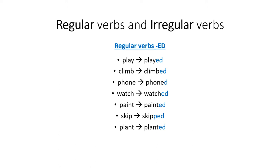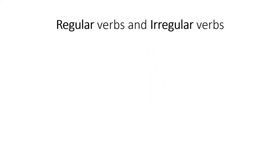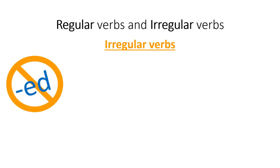But now in this unit we're not talking about regular verbs, we're talking about irregular verbs. These are verbs that haven't got "-ed" at the end. These verbs change completely. For example, do becomes did in the past.